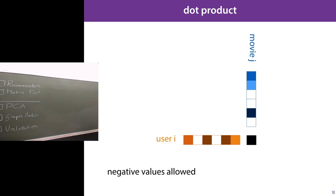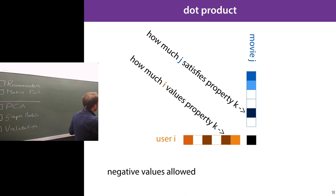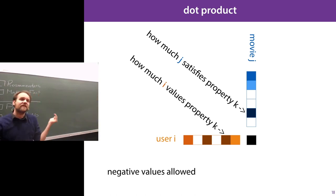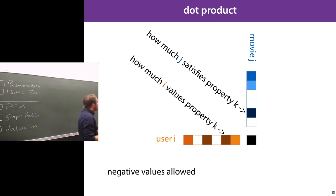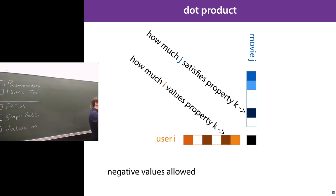These models learn a quite shallow view of the world — if this only holds for 60% of women and 60% of men, it still has predictive value so they learn it. The kth property in the user vector is how much the user values that property, and the kth property in the movie vector is how much the movie has that property. We'll assume the ratings are normalized so they fall between negative and positive infinity, with higher ratings meaning the user is more likely to like that movie.